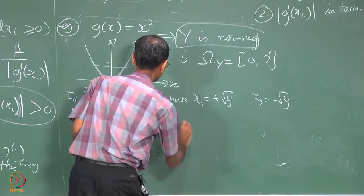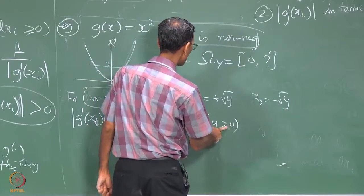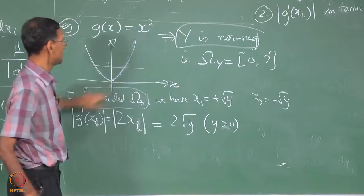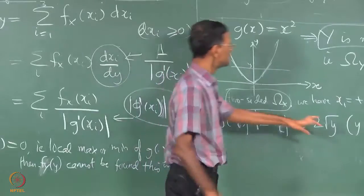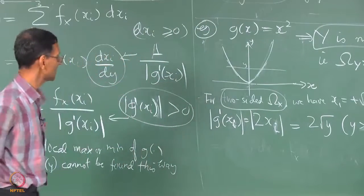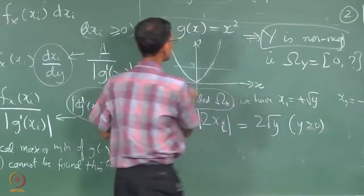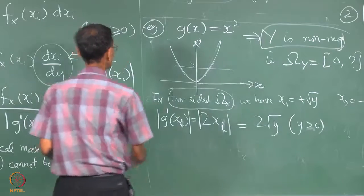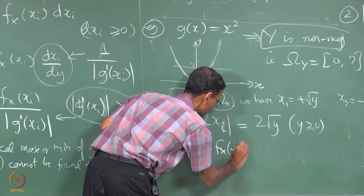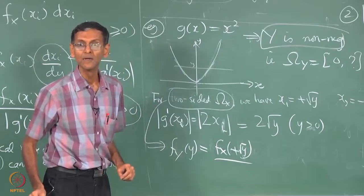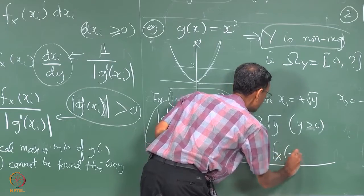Now I am not allowed to use that formula at this local minimum. I have to consider only a y which is positive, strictly positive. So what is the general formula now assuming that I have a 2 sided omega_X? For the 2 sided omega_X, I know that F_Y(y) is F_X(plus root y) divided by 2 root y plus F_X(minus root y) divided by 2 root y, again common denominator.